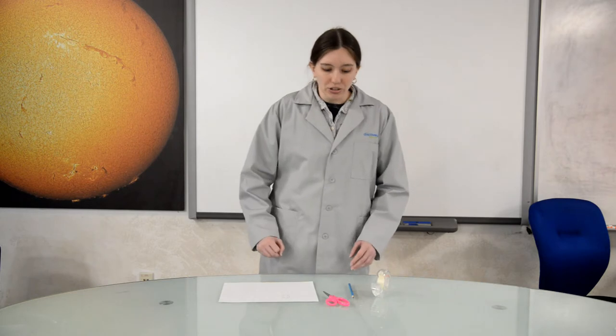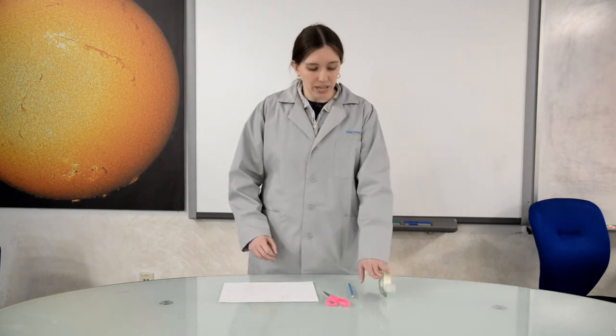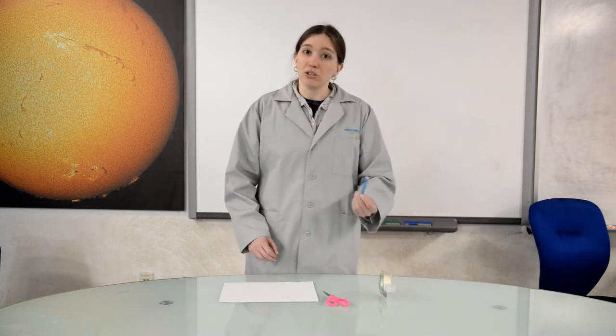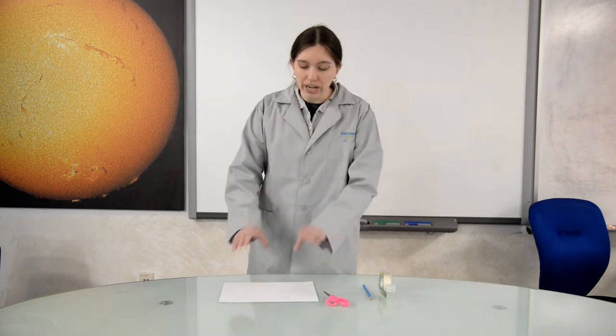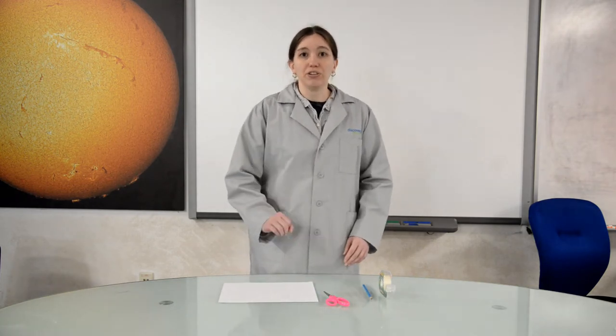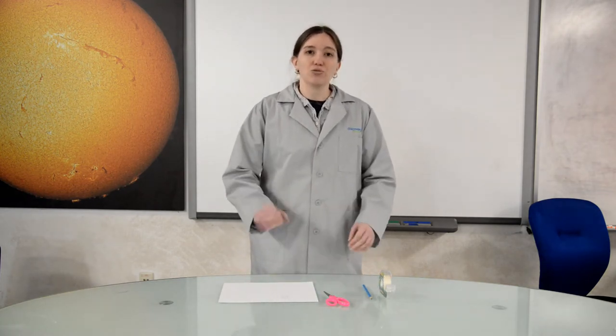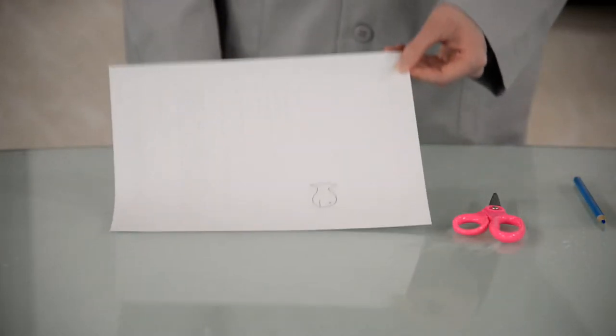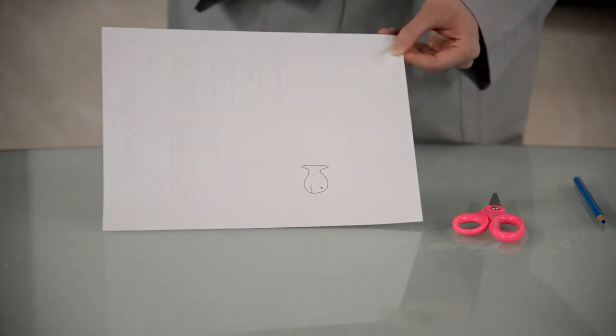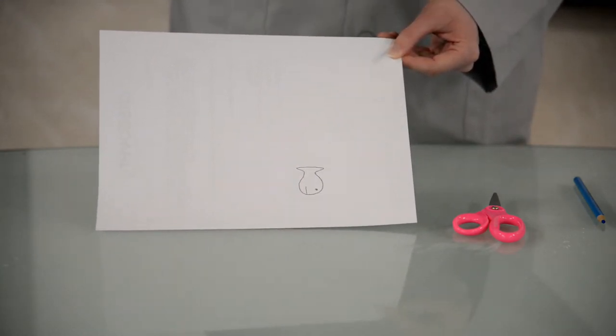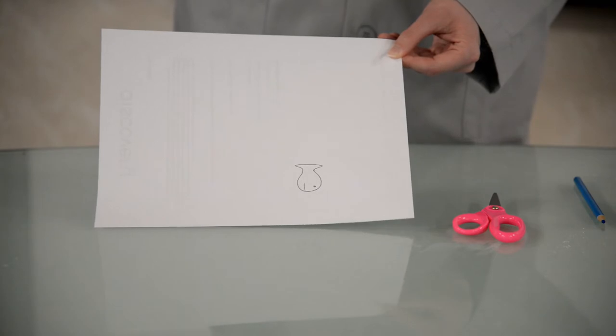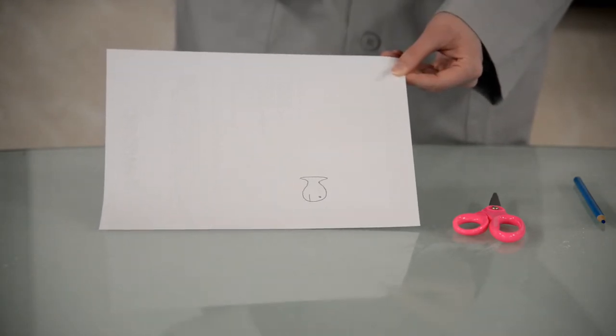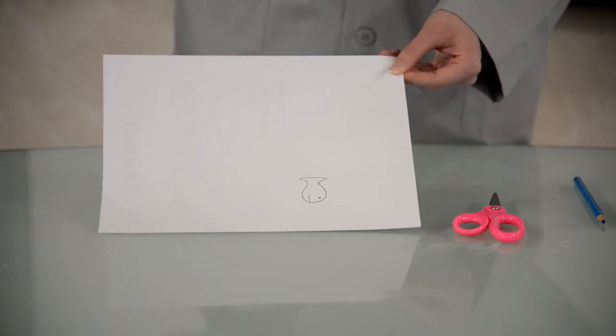To start, you're going to need tape, something to color with, scissors, and a piece of paper. The first thing you're going to want to do is draw a creature. I like to use a fish. You can see here I've drawn a very basic fish. Your drawing ability doesn't actually matter. What matters is that you've drawn a very basic shape that can be cut out later on.